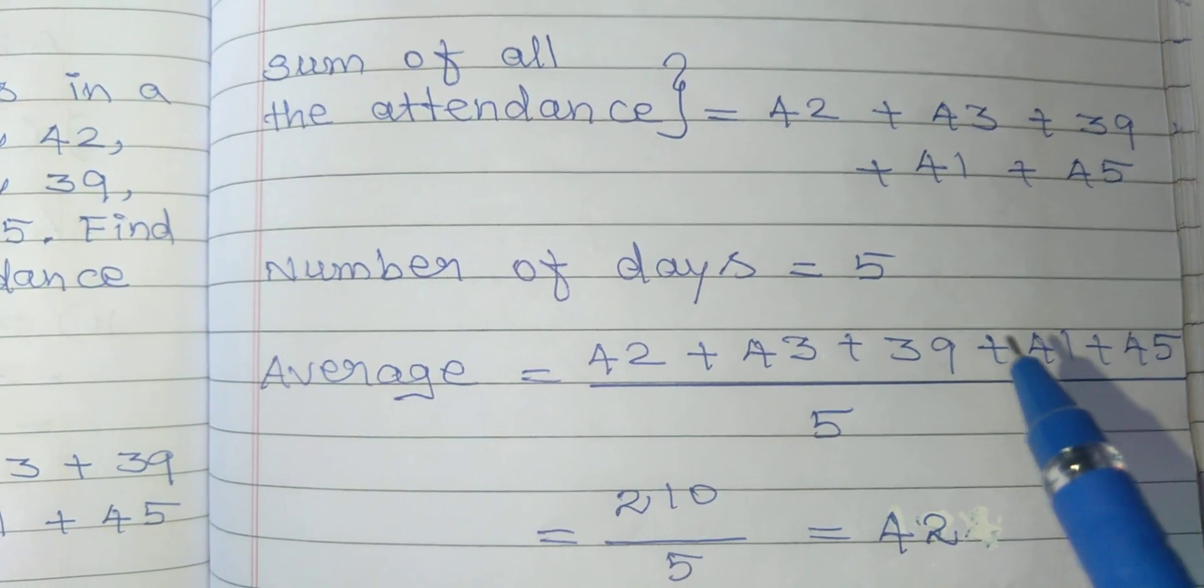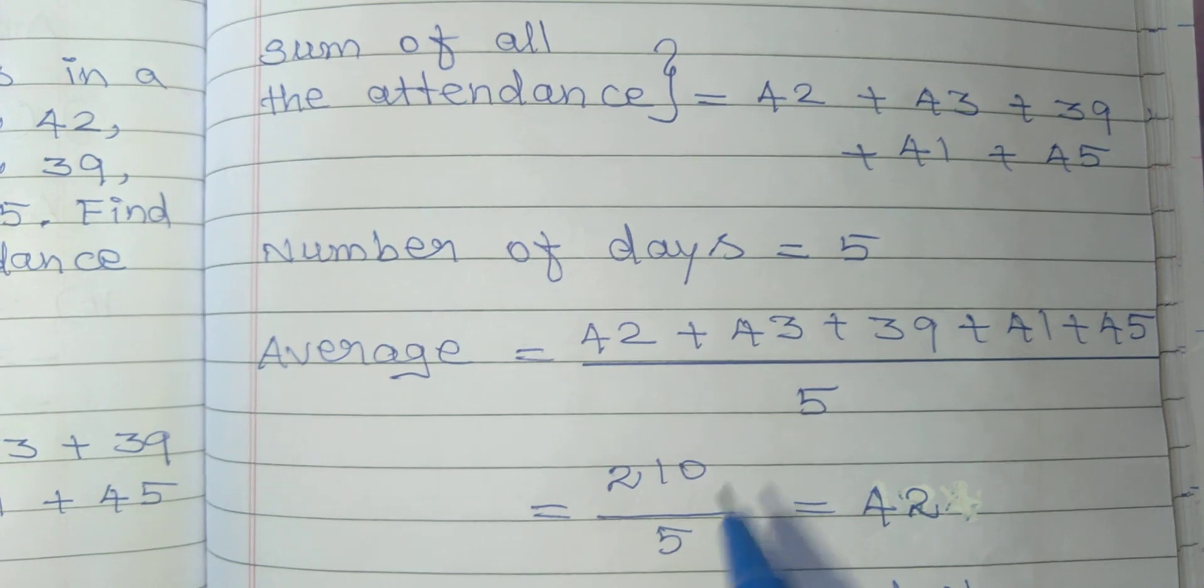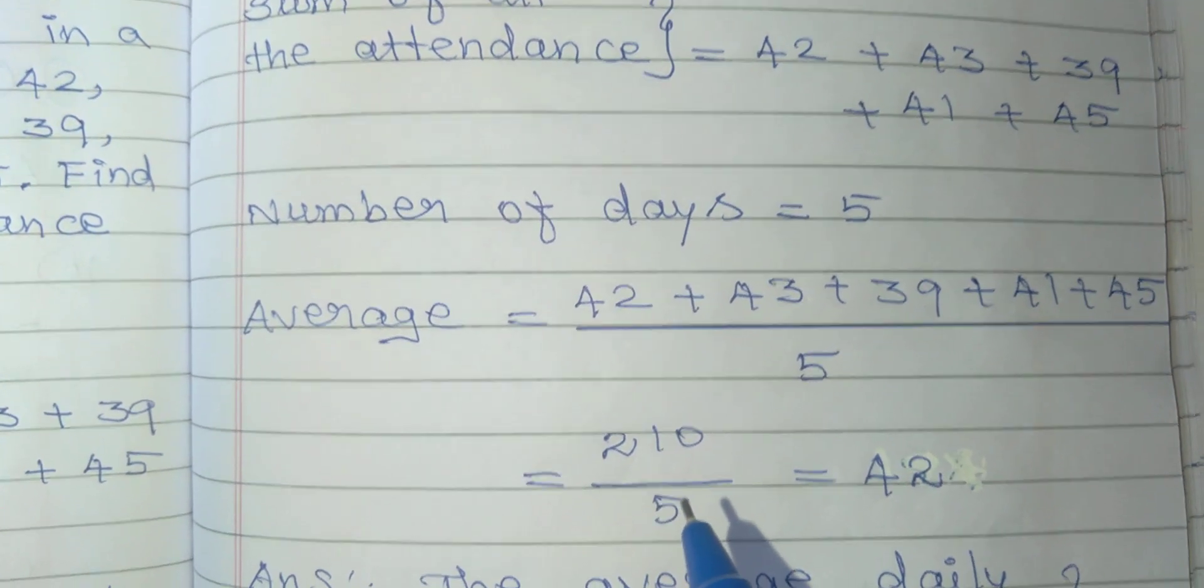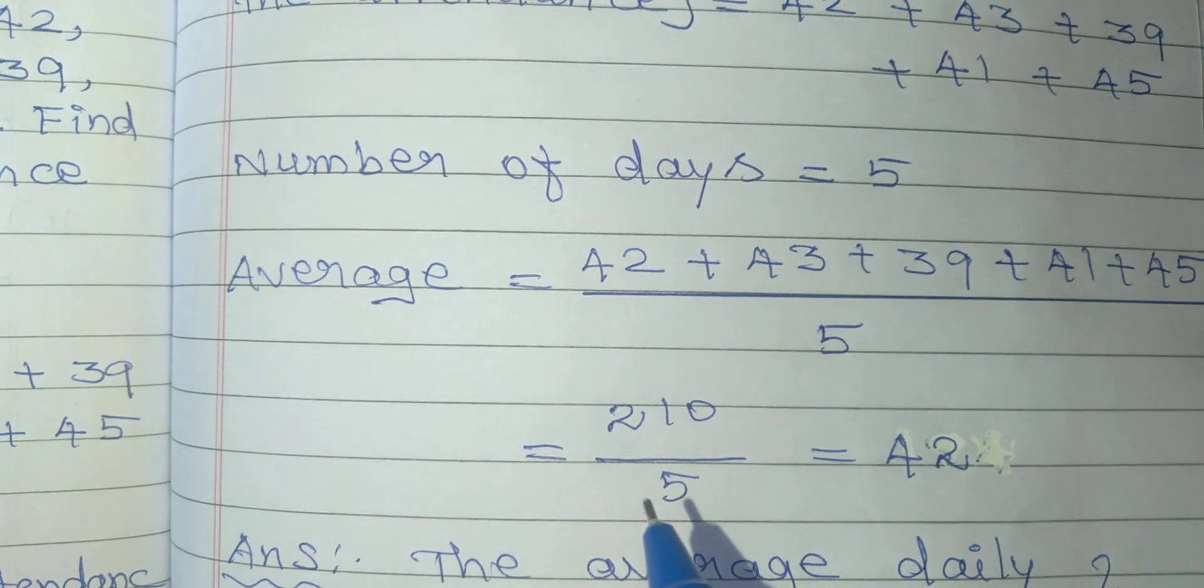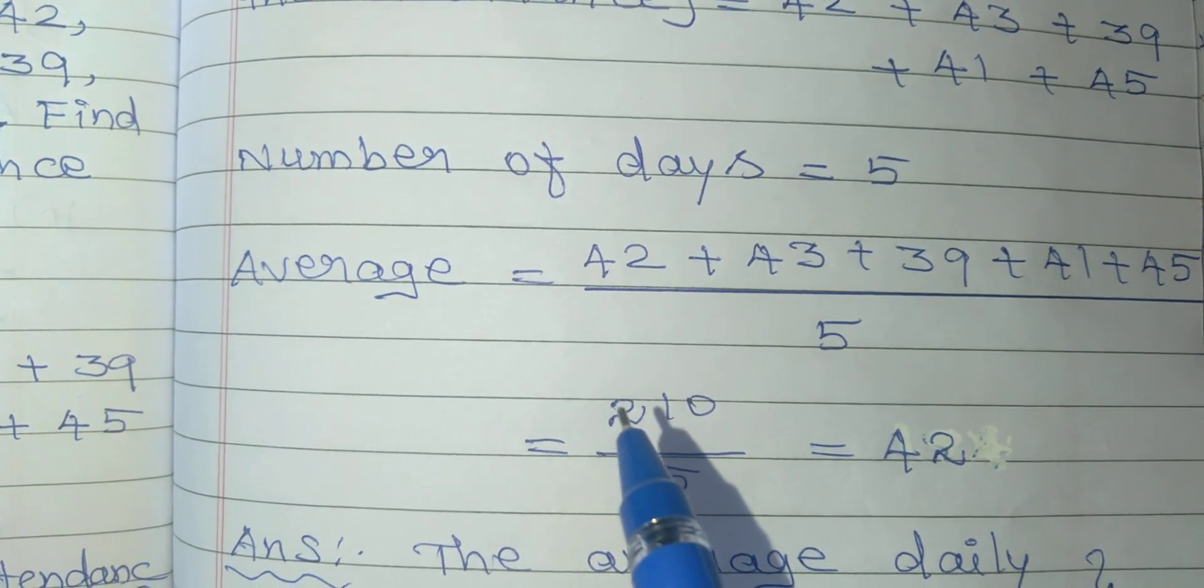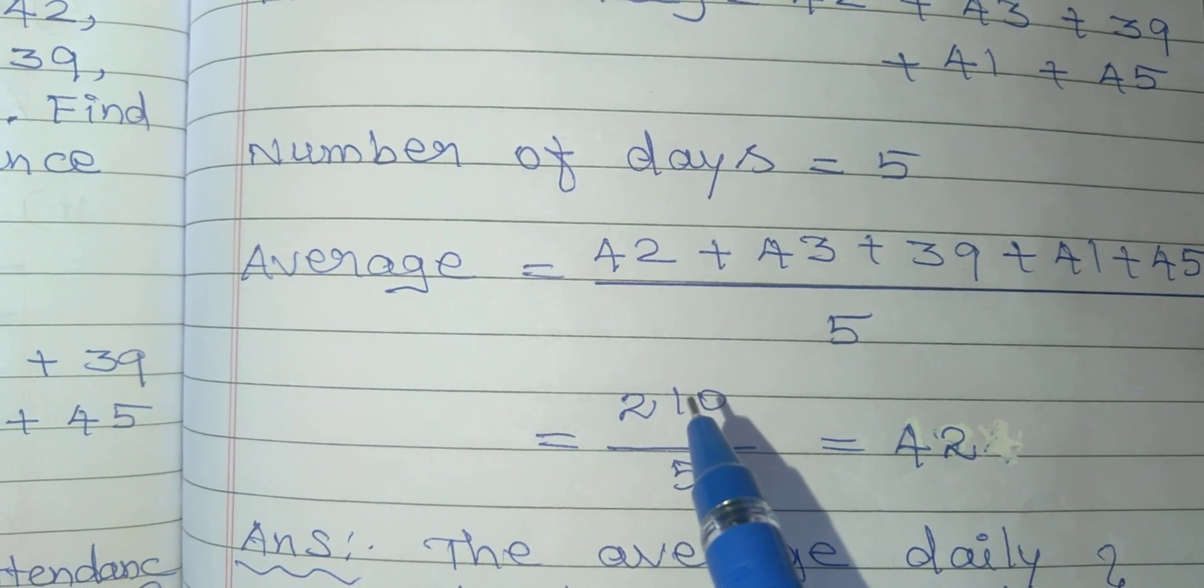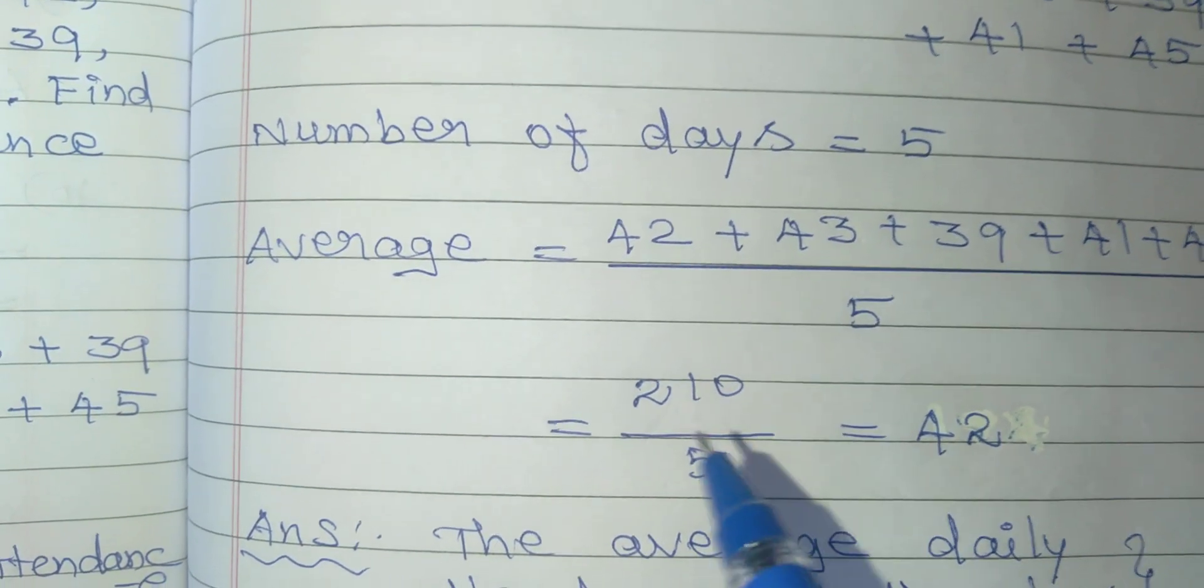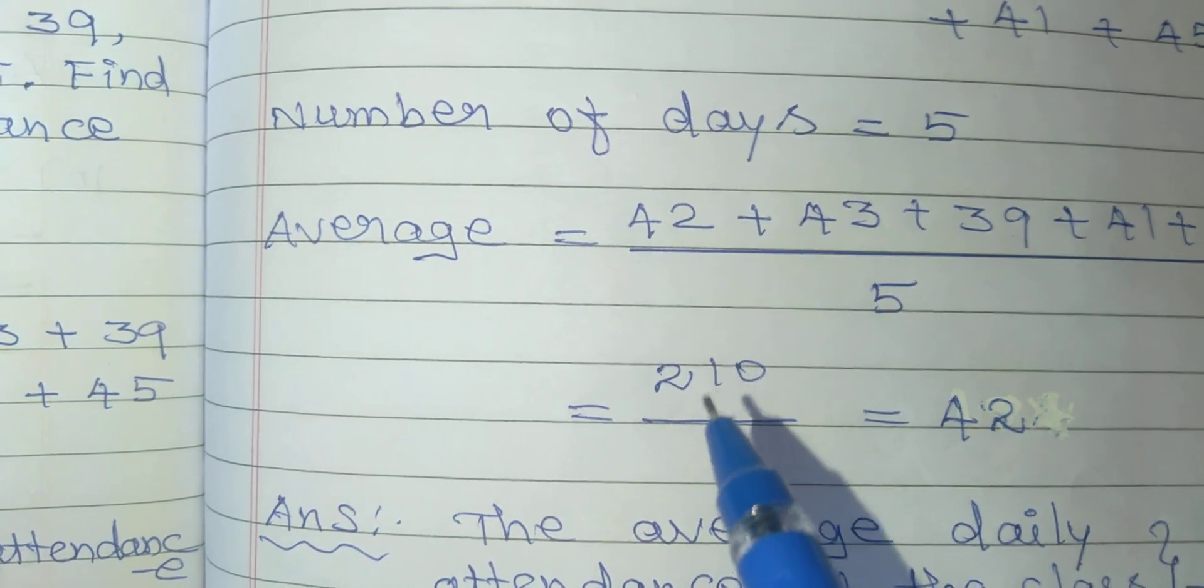If we add all the attendance, we get 210 divided by 5. Now we find how many times 5 goes into this. First, we take 21. How many times does 5 go into 21? 4 times.